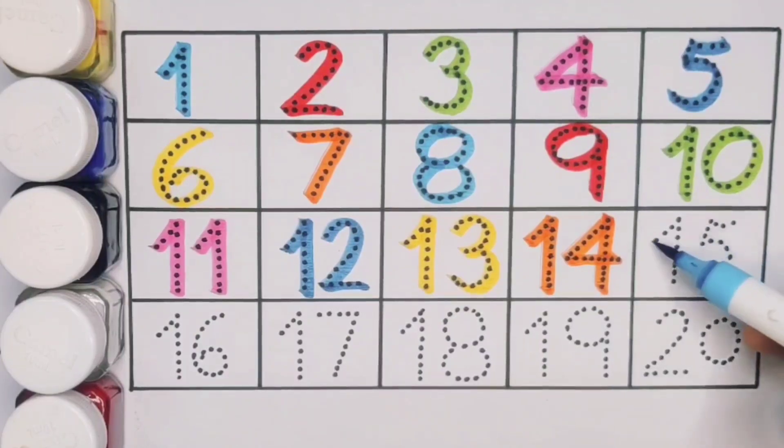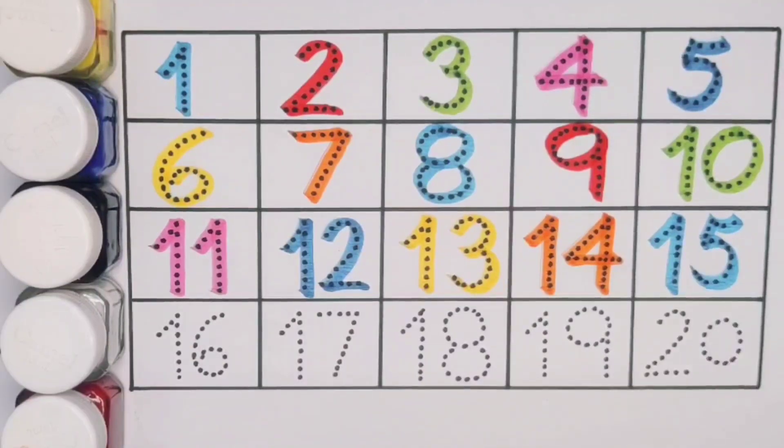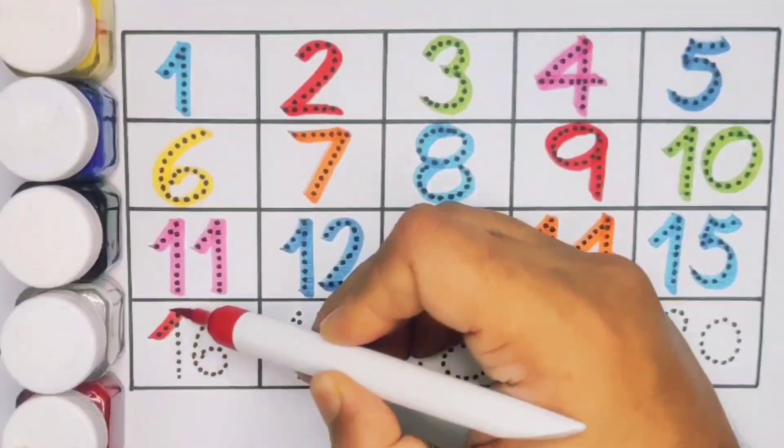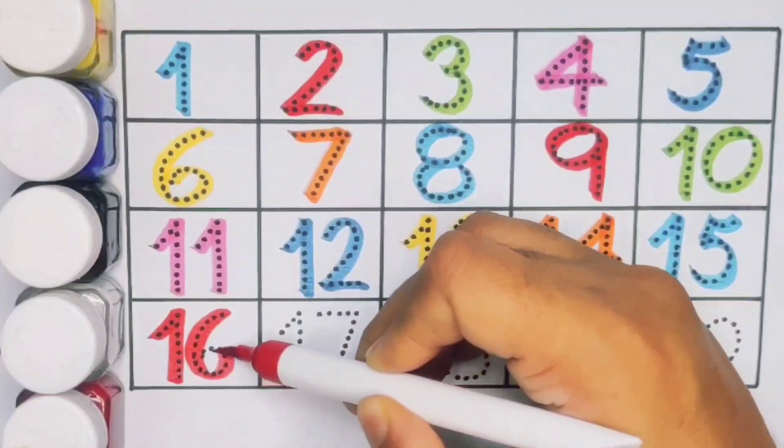Next kids 15, 1, 5, 15, number 15. Next kids 16, 1, 6, 16, number 16.